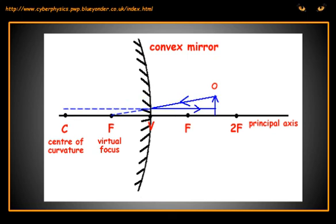A ray that aims at the virtual focal point as it goes towards the mirror will be reflected back along a path that is parallel to the principal axis.